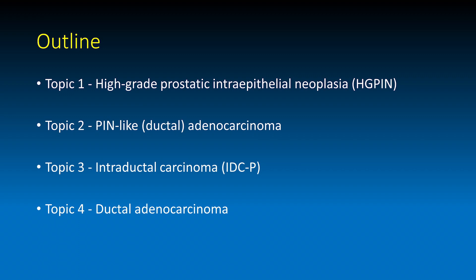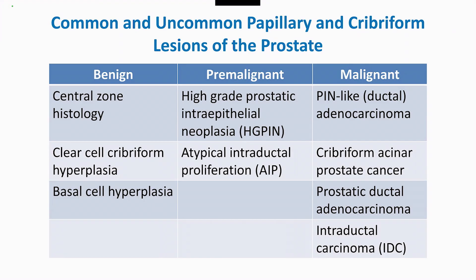In this presentation we will review high-grade prostatic intraepithelial neoplasia, PIN-like ductal adenocarcinoma, intraductal carcinoma, and ductal adenocarcinoma. There are common and uncommon lesions of the prostate with papillary and cribriform architecture that may be benign, premalignant, or malignant. On the benign side: central zone histology, clear-cell cribriform hyperplasia, and basal cell hyperplasia. On the premalignant side: high-grade prostatic intraepithelial neoplasia and atypical intraductal proliferation. On the malignant side: PIN-like ductal adenocarcinoma, cribriform acinar prostate cancer, prostatic ductal adenocarcinoma, and intraductal carcinoma.